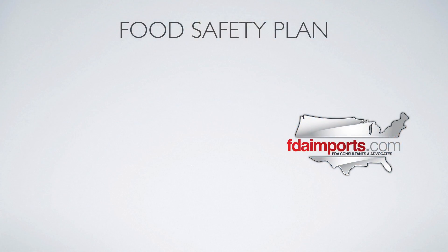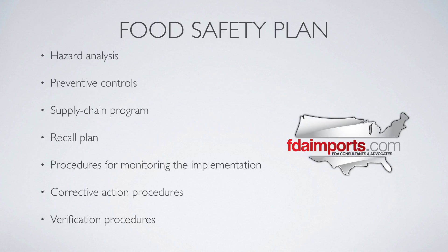The HARPC system is really centered around what's called a food safety plan, and there are certain components to this plan: hazard analysis, preventive controls, supply chain program, a recall plan, procedures for monitoring the implementation, corrective action procedures, and verification procedures. Probably one of the biggest effects of HARPC is the record keeping requirements across all these portions of a food safety plan — that will be a major undertaking to implement.